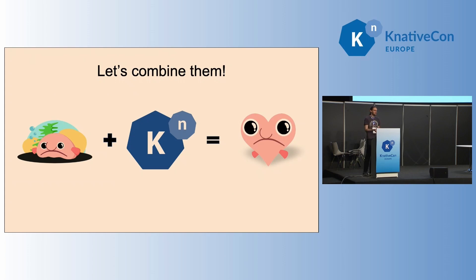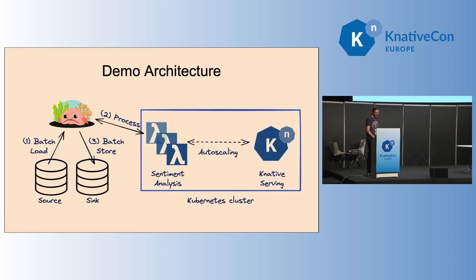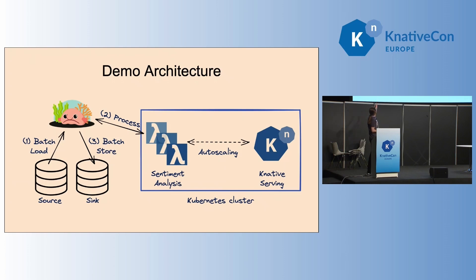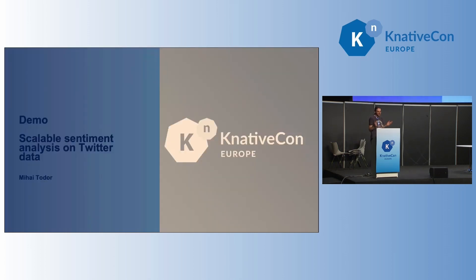So let's combine them. We can take Benthos, take Knative Serving, put them together, and see how Knative does the autoscaling for the pull-based autoscaling model Muru was introducing. For the demo, I'm going to have a local Kubernetes cluster running on kind with Knative Serving. Knative Serving is going to autoscale a sentiment analysis Lambda. Benthos is going to run on the side as a separate process. There's a Postgres database locally with a source and sync table. Benthos will read data from the source, batch load it, construct batches to send for sentiment analysis, and then batch-store the results in the sync.